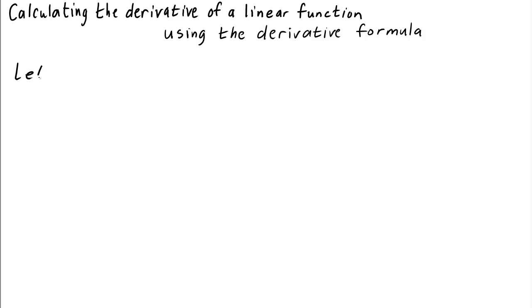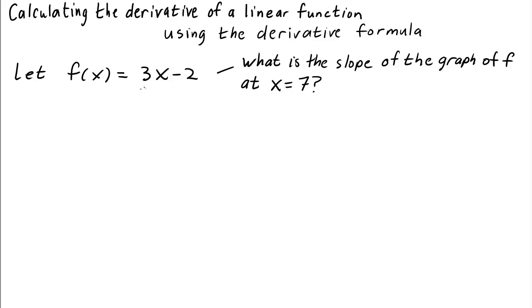Let's let the function f be a linear function. Let's say f of x equals 3x minus 2. Then we could ask, what is the slope of the graph of f at x equals 7? Well, that's pretty easy. By looking at the formula for f we can see that the slope is 3. In fact, it's 3 at any point. In other words, f prime of 7 must be equal to 3, because the derivative is the slope.